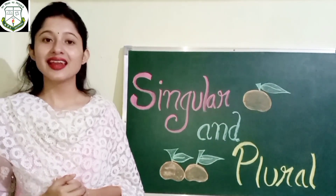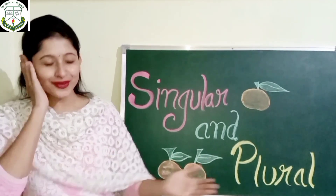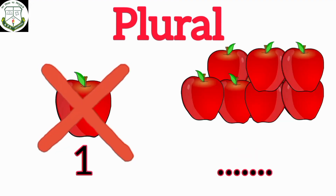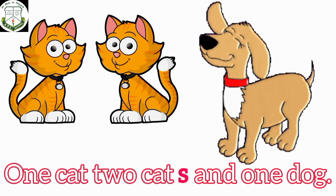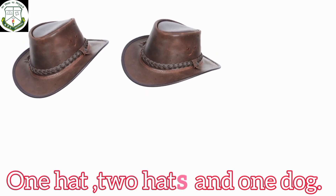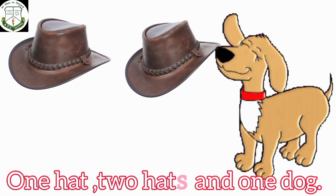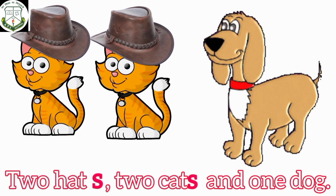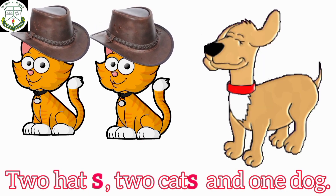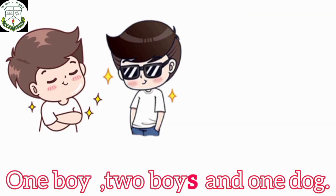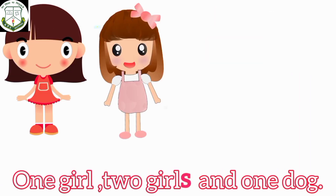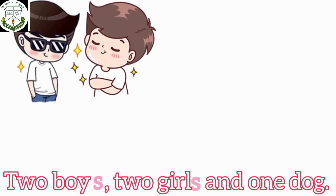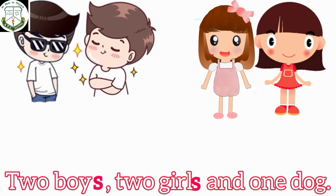Children, let's learn singular and plural in a musical way. One cat, two cats, and one dog. One hat, two hats, and one dog. Two hats, two cats, and one dog. One boy, two boys, and one dog. One girl, two girls, and one dog. Two boys, two girls, and one dog.